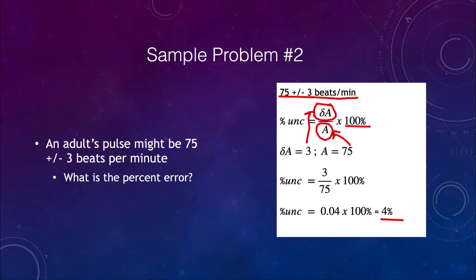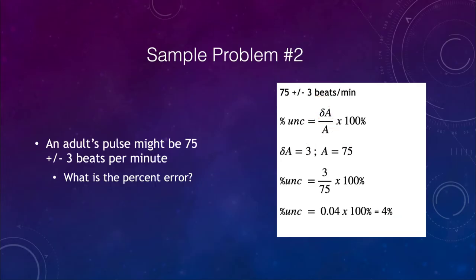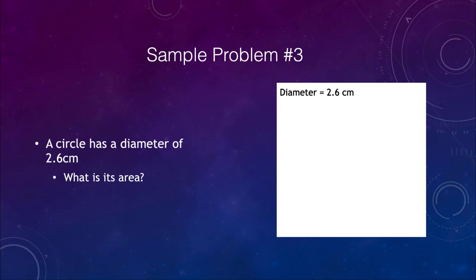Now our third one that we want to look at is a circle and figuring out its area. If a circle has a diameter of 2.6 centimeters, what is its area? Well, we know that the area of a circle is given by pi times the radius squared.